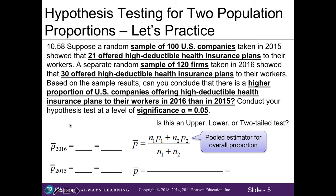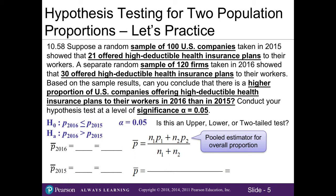First, let's set up our hypothesis test. Based on the context clues, the question asks whether the proportion in 2016 is greater than the proportion in 2015. So our alternative hypothesis states that the proportion in 2016 is greater than the proportion in 2015. With alpha = 0.05 and a greater than sign in our alternative hypothesis, this is an upper-tailed test.